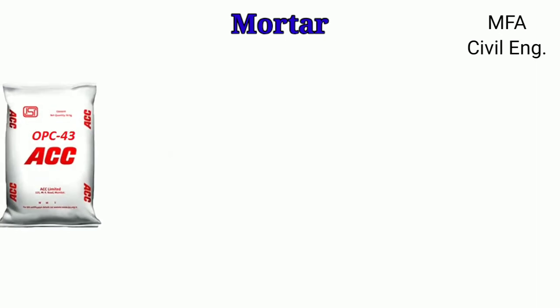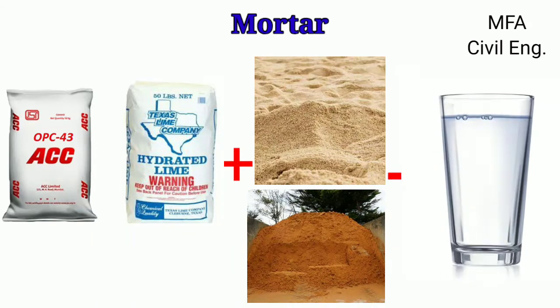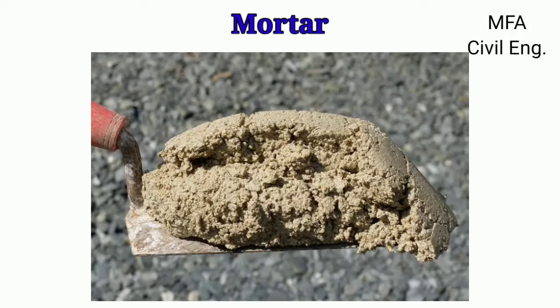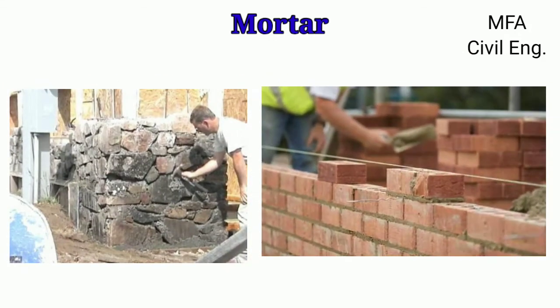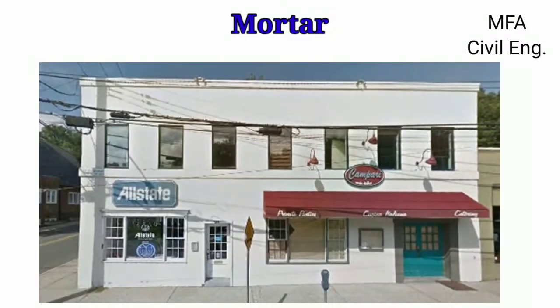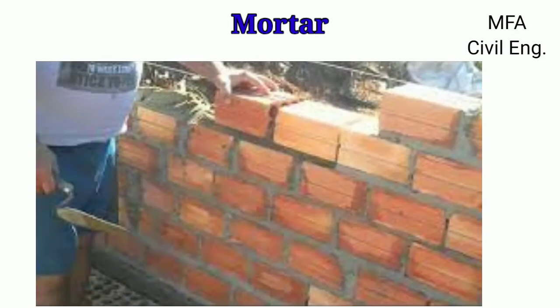Hello everyone, my name is Fazal, you are watching MFA Civil Engineering. When the binding material such as cement or lime is mixed with inert material like sand, surkhi, and water in appropriate proportion, a paste is formed which is called mortar. Mortar is used as a binding material for stone or brick masonry and gives a coat to the masonry wall in the form of plaster, which provides a smooth, uniform, hard, and decorative surface to the wall. Mortar must have sufficient strength to remain in its own position, it should be durable and have sufficient workability to fill the masonry joint completely.